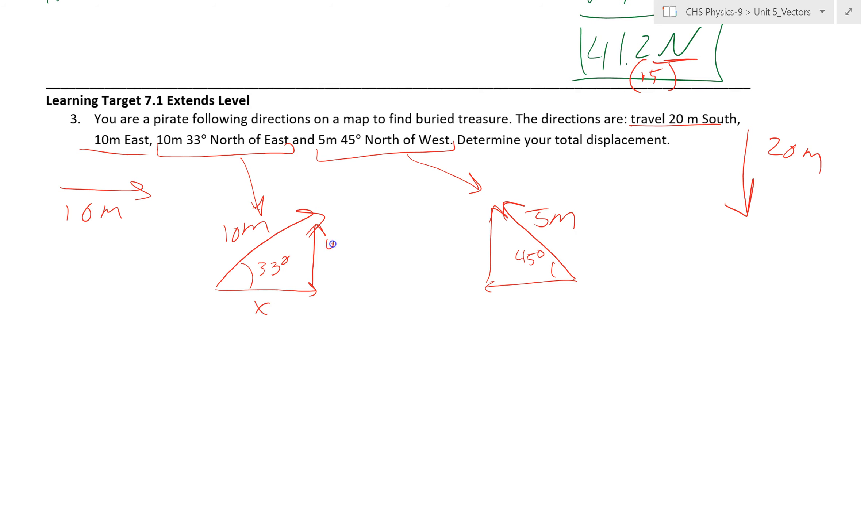So what you have to do is split this into x and y components, split this into x and y components. This is just in the x direction. The x direction is 10 meters, and the y direction would be 0 meters. And then for this one, similar, the y direction is negative 20 meters, and the x direction is 0. So I'm going to rewrite this to make it look better. So y direction on this one is 0, x direction would be positive 10 meters.